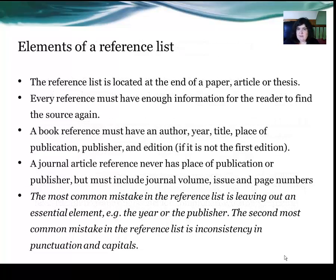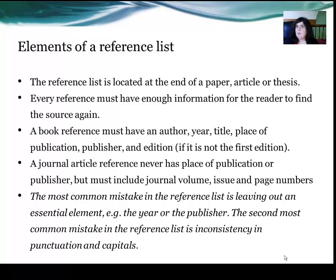So what are the elements of a reference list? At a minimum you have a reference list, located at the end of a paper, article, or thesis. Every reference must have enough information for the reader to find that source again. Under the Harvard referencing style, there are structures for referencing a book, a journal, a webpage, email communication, etc. — all outlined in Cite Right. A book reference must have an author, a year, title, place of publication, publisher, and editor. If it's not the first edition, you need to identify which edition it is.